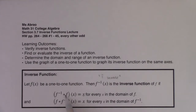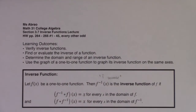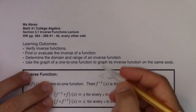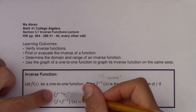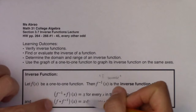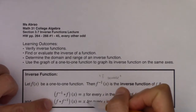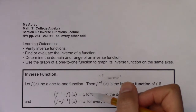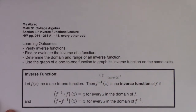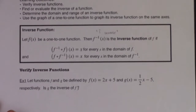If f inverse of f of x equals x, and f of f inverse of x equals x, then the two functions are inverse functions of one another. We're going to have to check both directions, because there will be times where one condition is met but not the other. So you do need to check it in both directions. With that, let's take a look at example one.